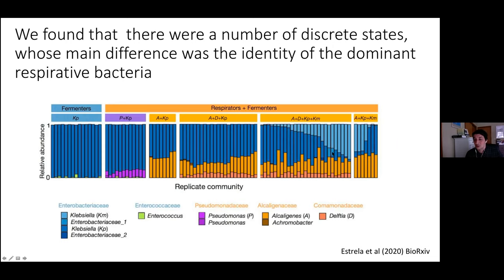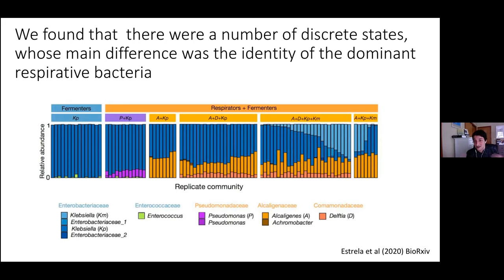We notice that whenever we find Comamonadaceae it can only be with Alcaligenaceae — we never see it with Pseudomonas. Comamonadaceae apparently requires Alcaligenaceae to be present. In sum, there's a suite of different alternative states, easier to see when you do this experiment in much higher throughput: six different types of equilibria depending on the presence or absence of species above one percent. One is a state where there are no respirative bacteria above one percent — something we had occasionally seen before but now find is a reproducible state.